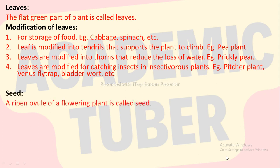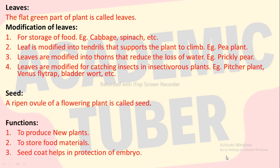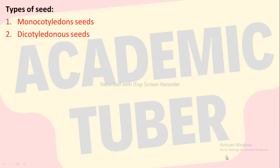Seed. A ripened ovule of a flowering plant is called seed. Function of seed: to produce new plants, to store food materials, and the seed coat helps in protection of the embryo. There are two types of seeds: monocotyledonous seed and dicotyledonous seed.